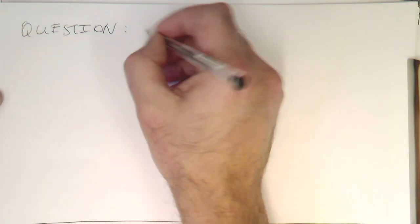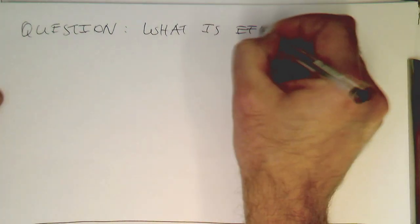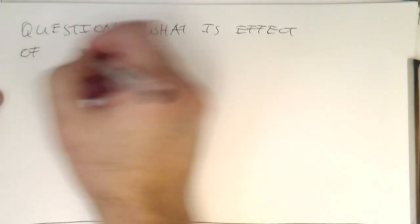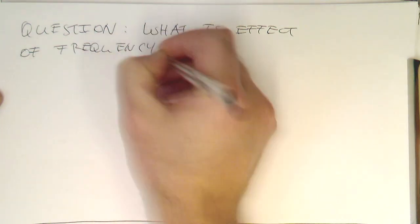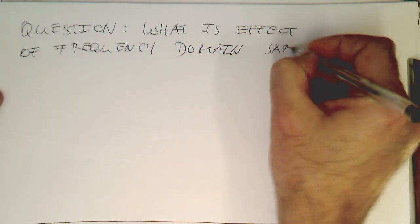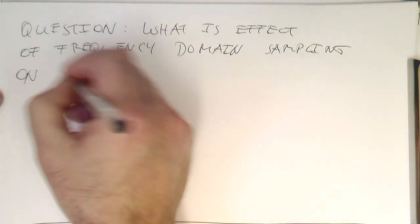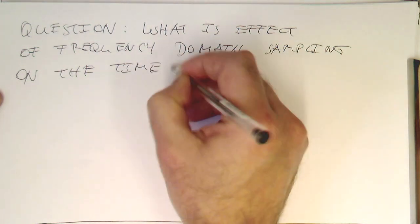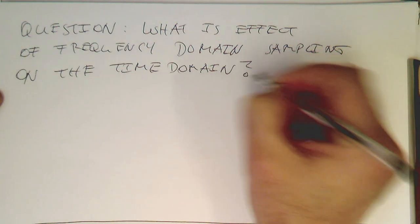So the question now is, what is the effect of frequency domain sampling? Frequency domain sampling on the time domain. So how do we see that?